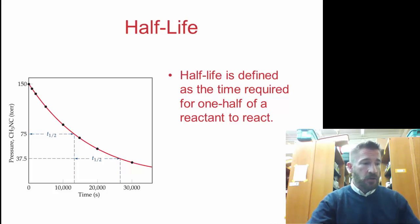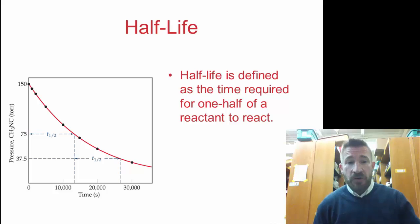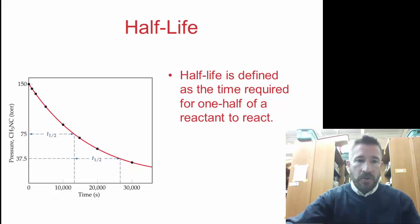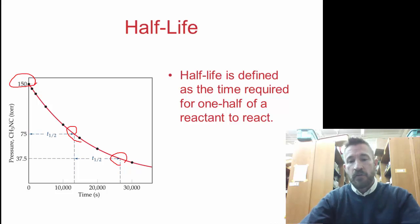Notice the other idea that we're going to talk about briefly is half-life. Half-life really only goes with first order reactions. Half-life is defined as the time required for one half of a reactant to go from reactants to products. If you start with 150 torr, when it goes down to half that, 75 torr, that would be one half-life. When 75 goes down to 37.5, that is the second half-life. Notice that each half-life is the same. The length of the half-life does not change in the process of the reaction.